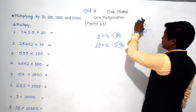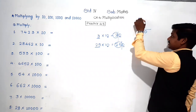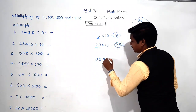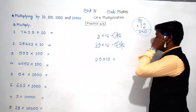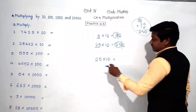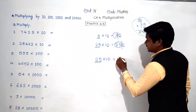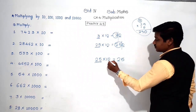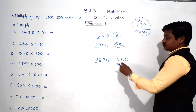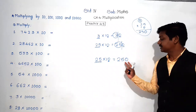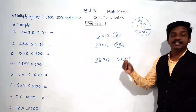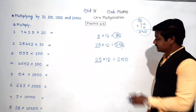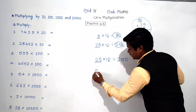So instead of doing multiplication the traditional way, if you want to find the answer of 25 into 10, here is what you do directly: write the number 25 as it is, and since ten has one zero, write that one zero after 25. Within a fraction of a second you get the answer 250. Understood? Similarly, what would be 25 into 100?